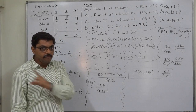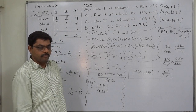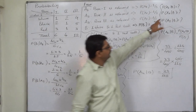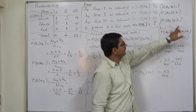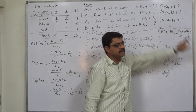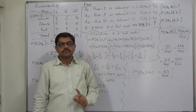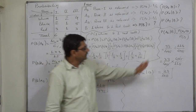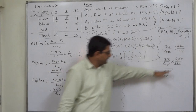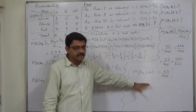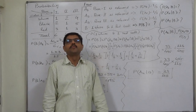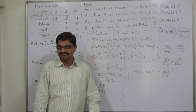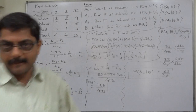I leave it to you to calculate P(A2|B) and P(A3|B) as homework on the basis of this. Just calculate the remaining two probabilities. That's it — thank you very much.